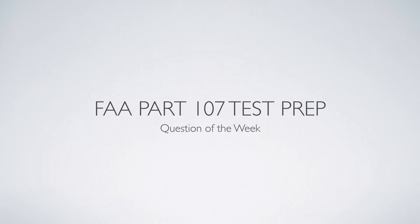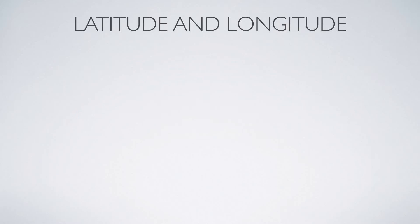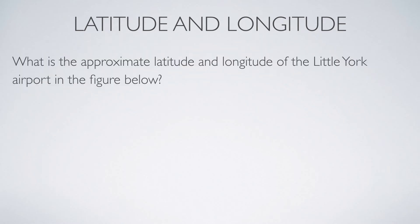Today we have another FAA Part 107 test prep question of the week. This week we are dealing with latitude and longitude. This continues to be a subject that causes a lot of confusion for new drone pilots, especially if you don't have any aviation background. Latitude and longitude isn't exactly intuitive, so sometimes it takes a little bit of work. The question this week is: what is the approximate latitude and longitude of the Little York Airport in the figure below?